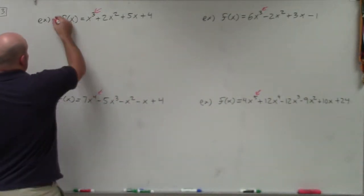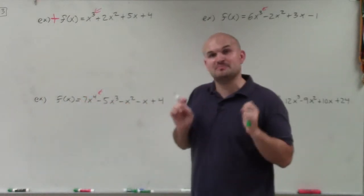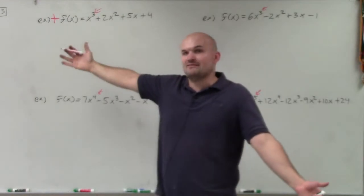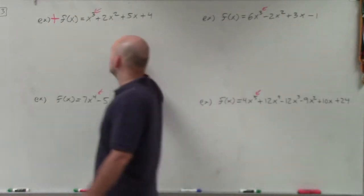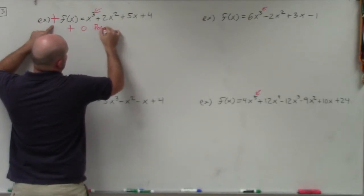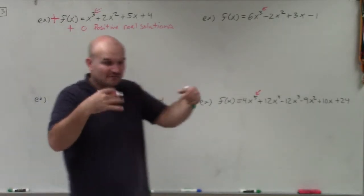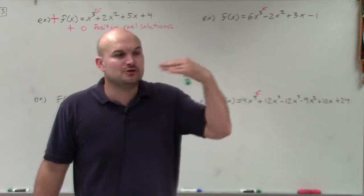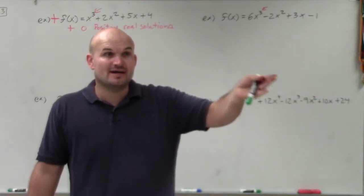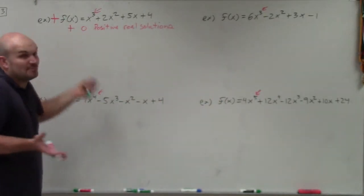The easiest thing is finding the positive solutions, because you don't have to do anything to the equation. All you simply need to do is determine the number of sign changes between each of the terms. Here, all terms are positive, so there are zero sign changes. Therefore, there are zero positive real solutions. This means you don't have to test any positive rational zeros — only negative ones.